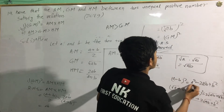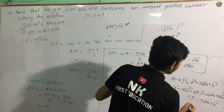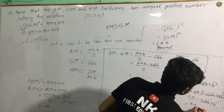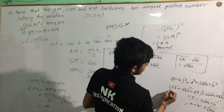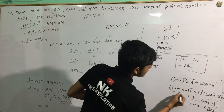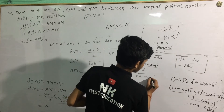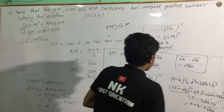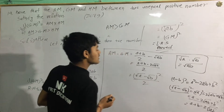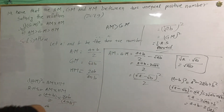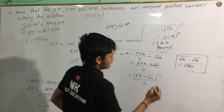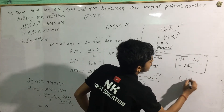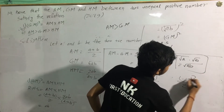Similarly, a plus b minus 2 root under AB equals (root under A minus root under B) squared, which is always positive or zero. Therefore the arithmetic mean minus geometric mean is always positive.